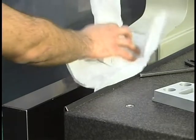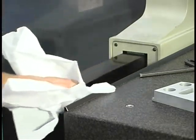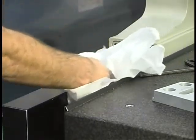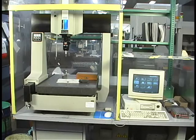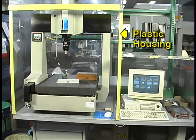Because the air bearing provides only two ten thousandths of an inch of bearing clearance, it is important to keep the ways and the air supply clean and dry. This CMM has been placed in a plastic housing to help reduce contamination from dust and dirt in the shop.